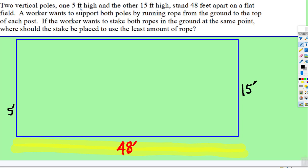Alright, so two vertical poles, one 5-foot high and the other 15-foot high are 48 feet apart on a flat field,